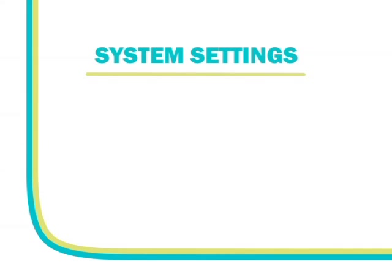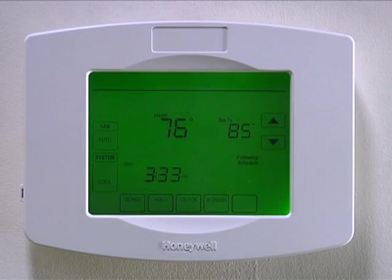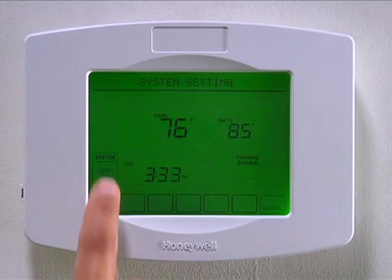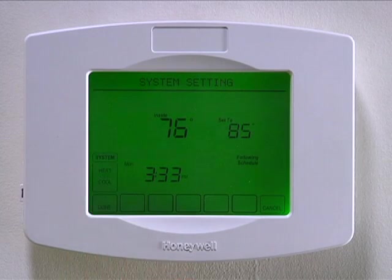The system settings are the heating and cooling settings. The setting options are: Heat — the smart thermostat will control only the heating system; Cool — the smart thermostat will control only the cooling system; Off — heating and cooling systems are turned off; EM Heat, which stands for emergency heat — this setting is only for heat pumps, and the smart thermostat controls emergency and auxiliary heat. To select a system setting, press system to scroll through the system settings. Once you have selected the desired setting, press done.